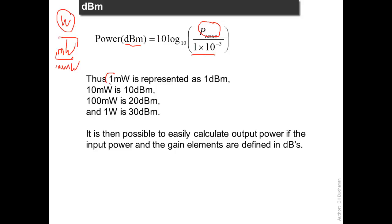So we take 1 milliwatt. That's 1 times 10 to the minus 3. Divided by that we get 0 dBm. 10 milliwatts we get 10 dBm. And then so on. So it's very easy for us to be able to calculate in terms of its relationship to 1 milliwatt.